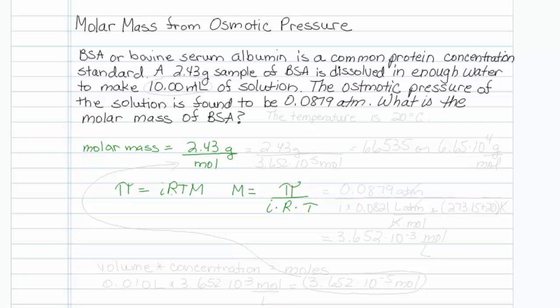Okay. Now just time to substitute in our variables. The osmotic pressure is given to us, 0.0879 atmospheres. The Van't Hoff factor, as I mentioned, is 1. R is 0.0821 liter atmospheres per kelvin mole. And our temperature, we should probably put in kelvin so it will cancel out.